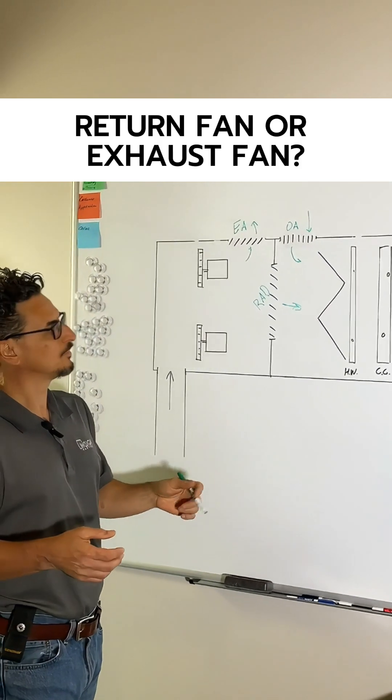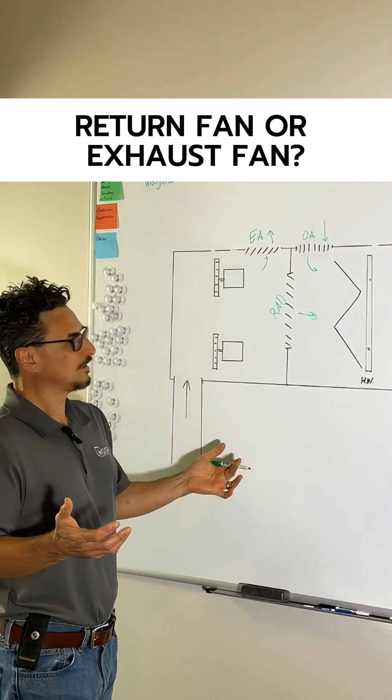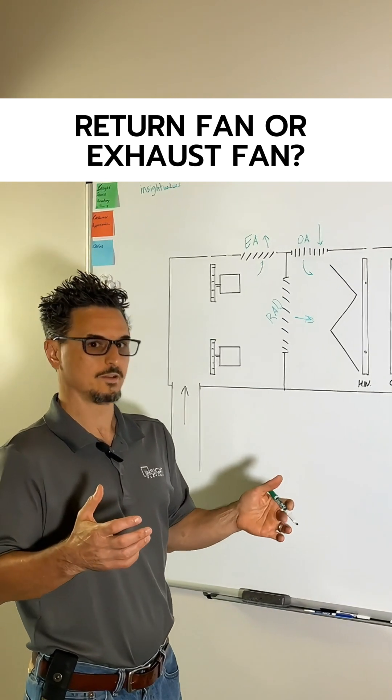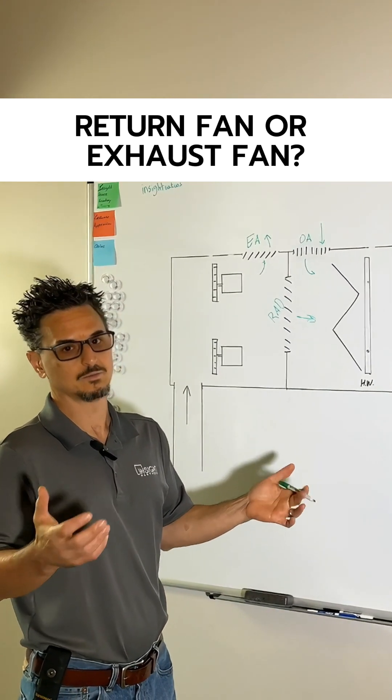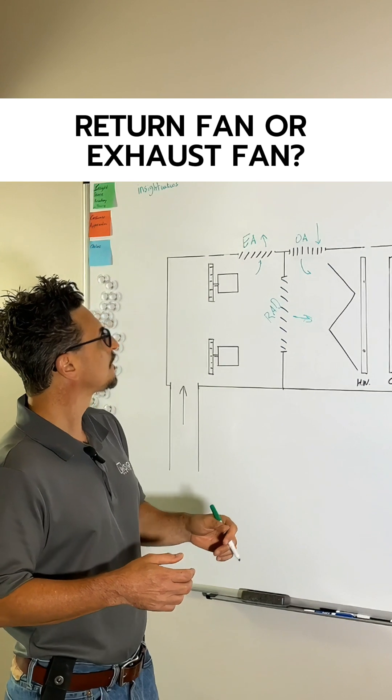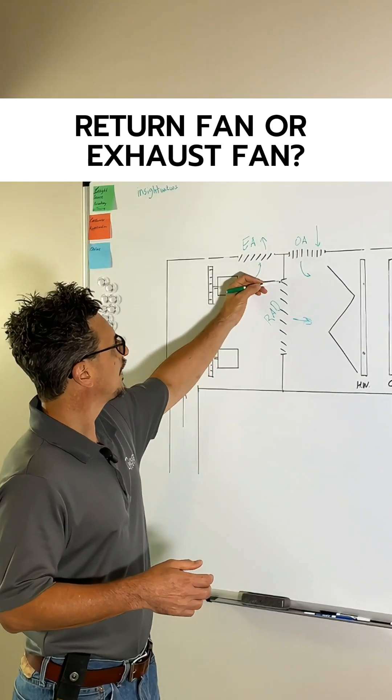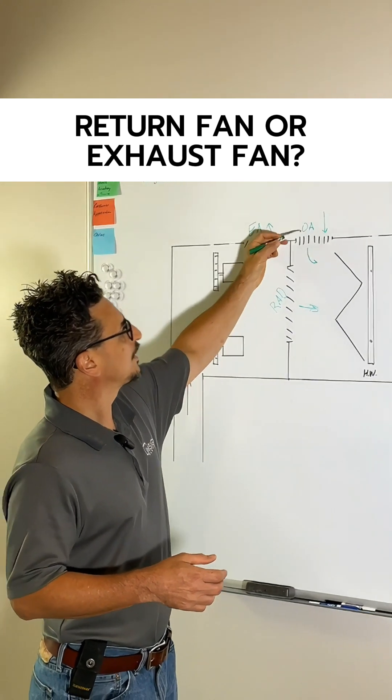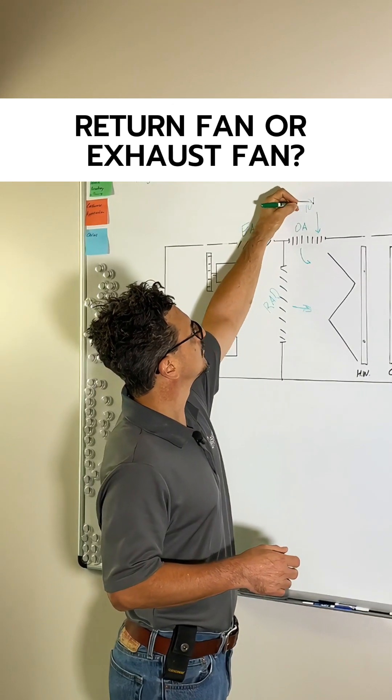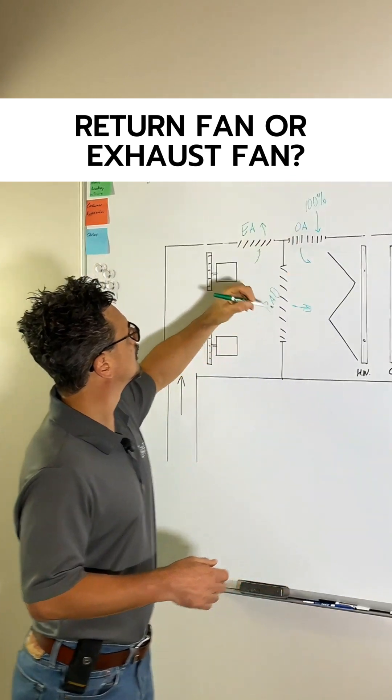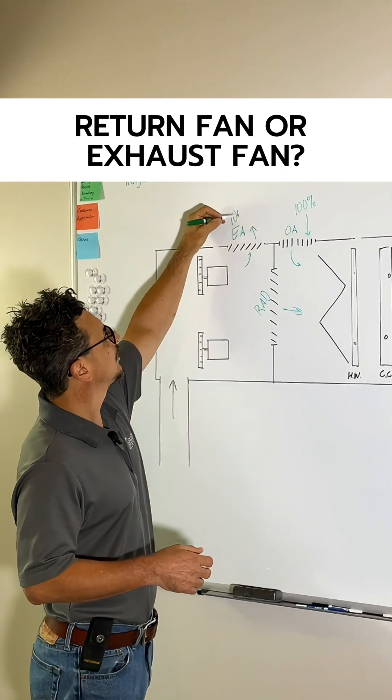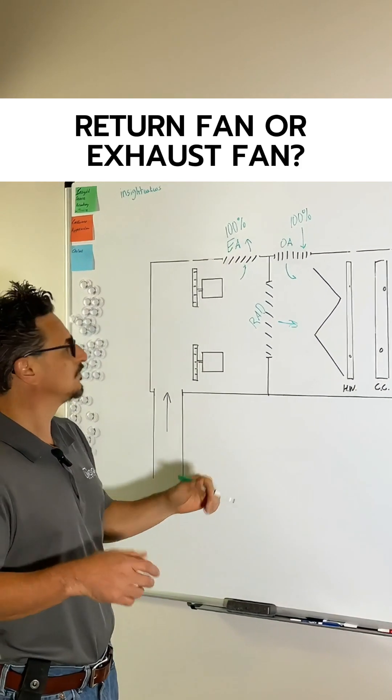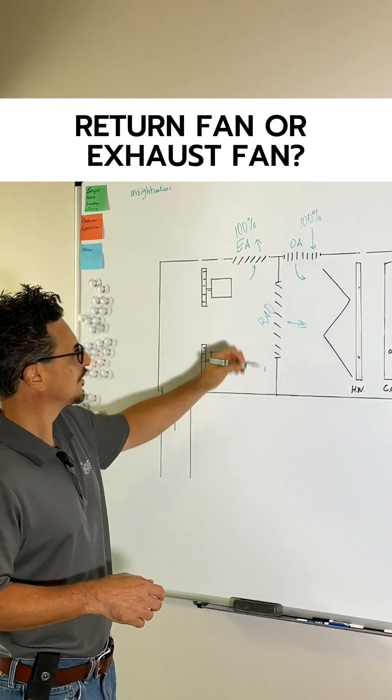20% outside air-ish or whatever. So the great thing about this is when you have an economizer scenario. Let's say you have 55 degrees outside, it's a beautiful low dew point day. What you can do is close this return air damper, okay, just close this off and bring in 100% outside air and exhaust. 100%-ish, you know, you want to keep the building positively pressurized, but you get the gist there. So this will be completely closed off in that scenario.